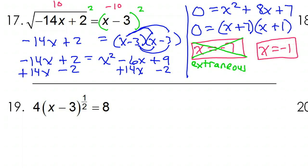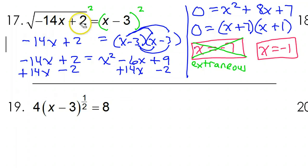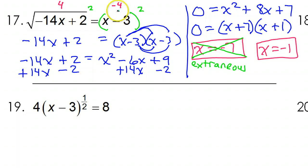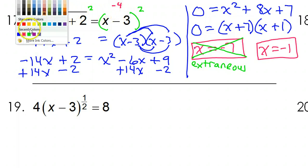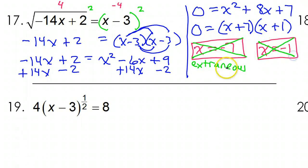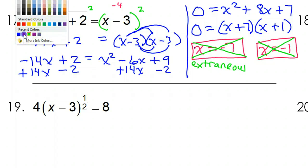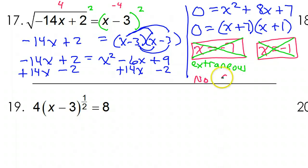What about negative 1? If I put in negative 1, that would make positive 14, and 14 plus 2 is 16. The square root of 16 is 4, so I'm getting a positive 4 here. But negative 1 minus 3 is negative 4 — not the same. So this is also extraneous. Both of my possible solutions turned out to be extraneous.